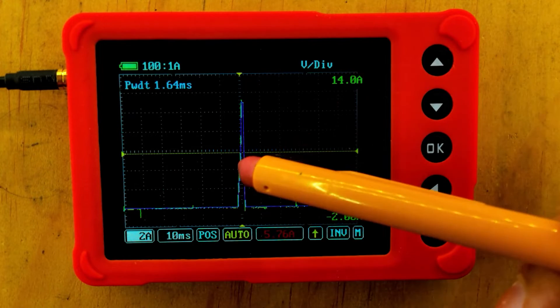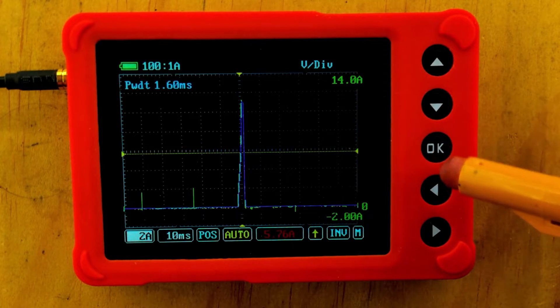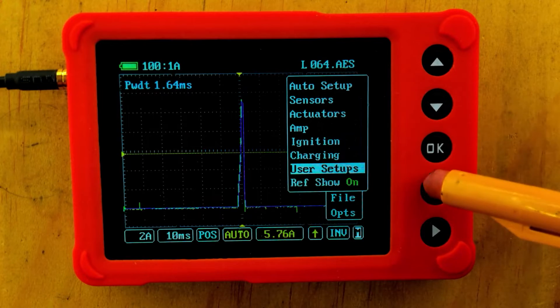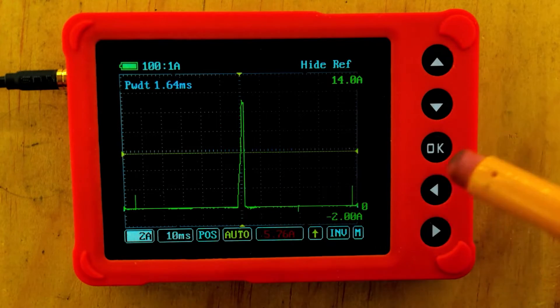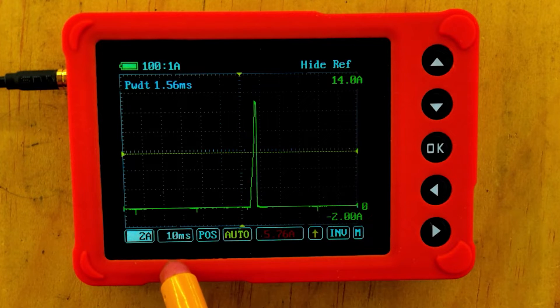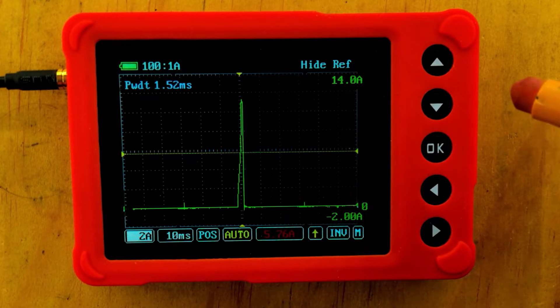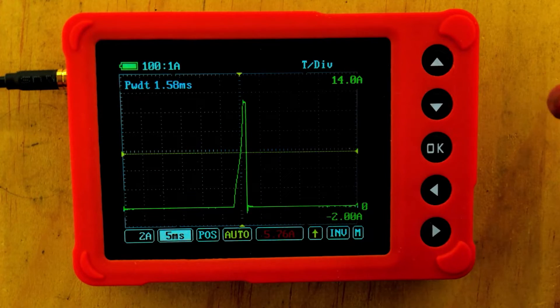Once again, our reference file is right on top of our pattern, and I'm going to go ahead and turn that reference file off. I have it on 10 milliseconds per division here because it tends to jump around a lot. If I go to a smaller time frame, it doesn't get as stable.